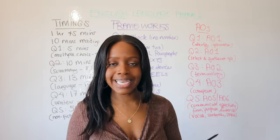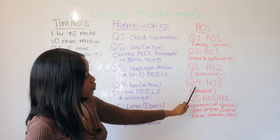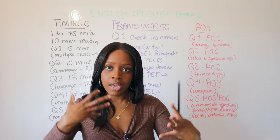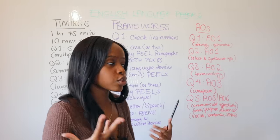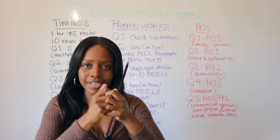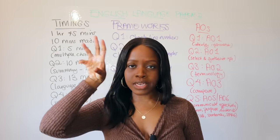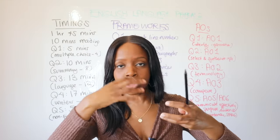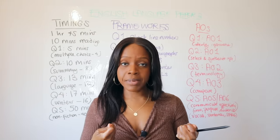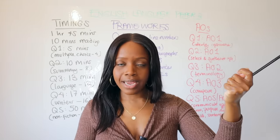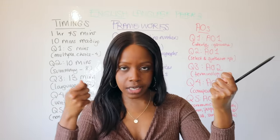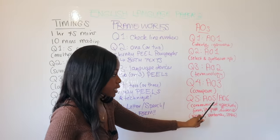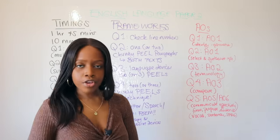Question Three tests AO2 — your awareness of subject terminology: alliteration, metaphor, similes, and so on. Question Four, the second comparative question, tests AO3: can you effectively compare texts, discussing Source A and Source B and how writers illustrate similar or different viewpoints through language and structural devices? This question is worth 16 marks and needs to be developed in much greater depth.